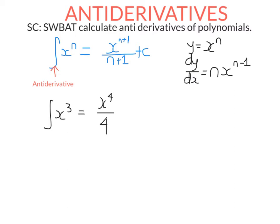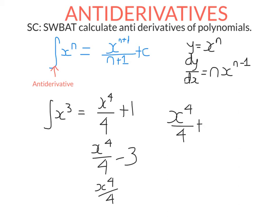The thing is, there are heaps of different functions I could differentiate to get this. I could differentiate x to the power of four over four plus one, or x to the power of four over four minus three, or just plain old x to the power of four over four. If I differentiate any of these functions I get x to the power of three — this would work if I added any number at all, like plus 11, plus 207, whatever. So x to the power of four over four plus a constant. That's why we write the answer as x to the power of four over four plus some constant c.